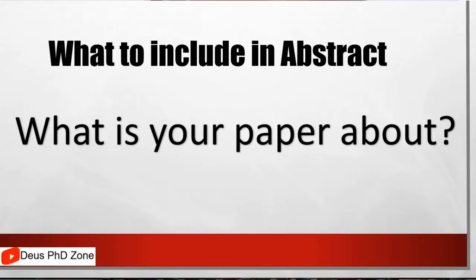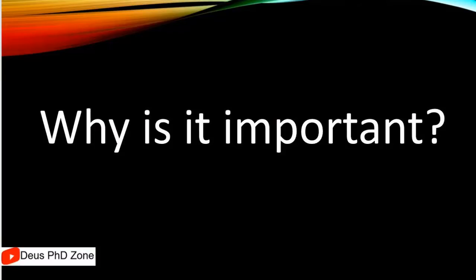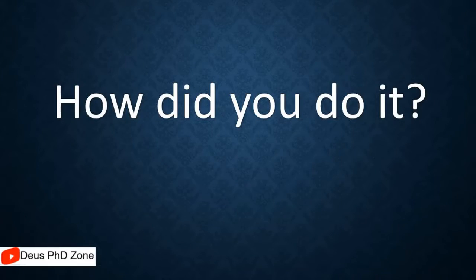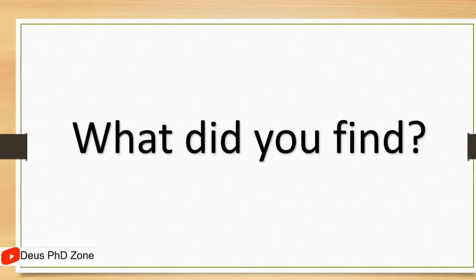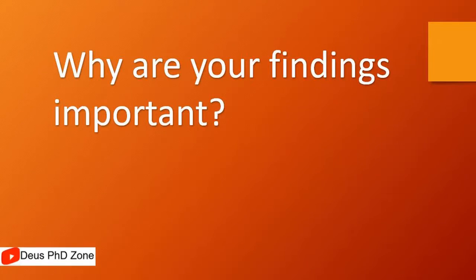What to include exactly in an abstract, step by step: first, write what your paper is about and why it is important. Then explain how you did your research, what you found, and why your findings are important.